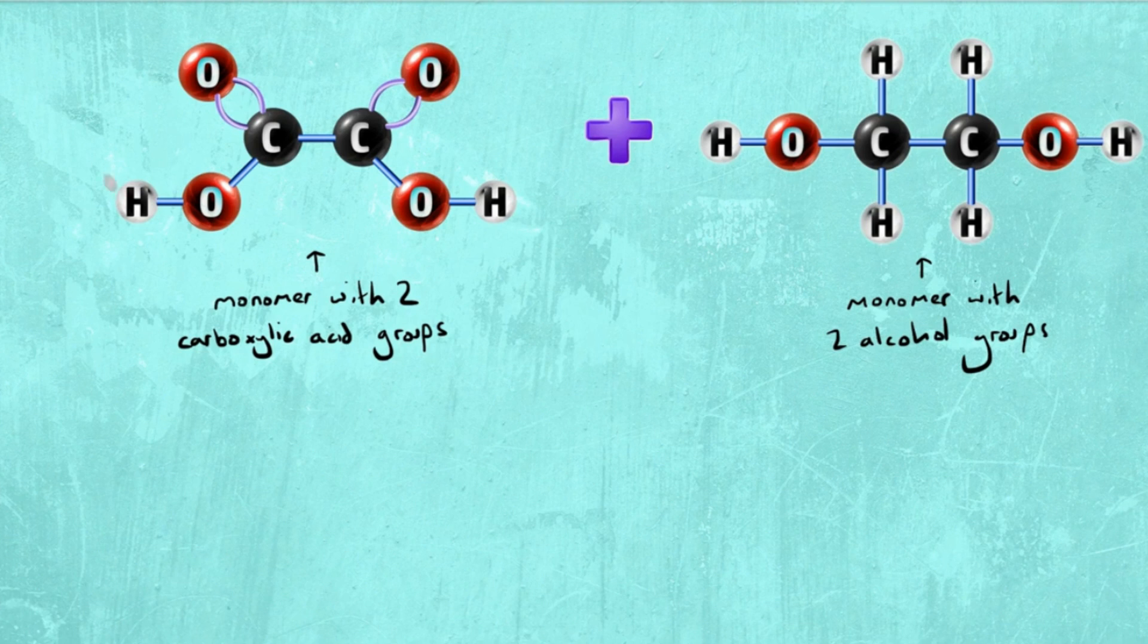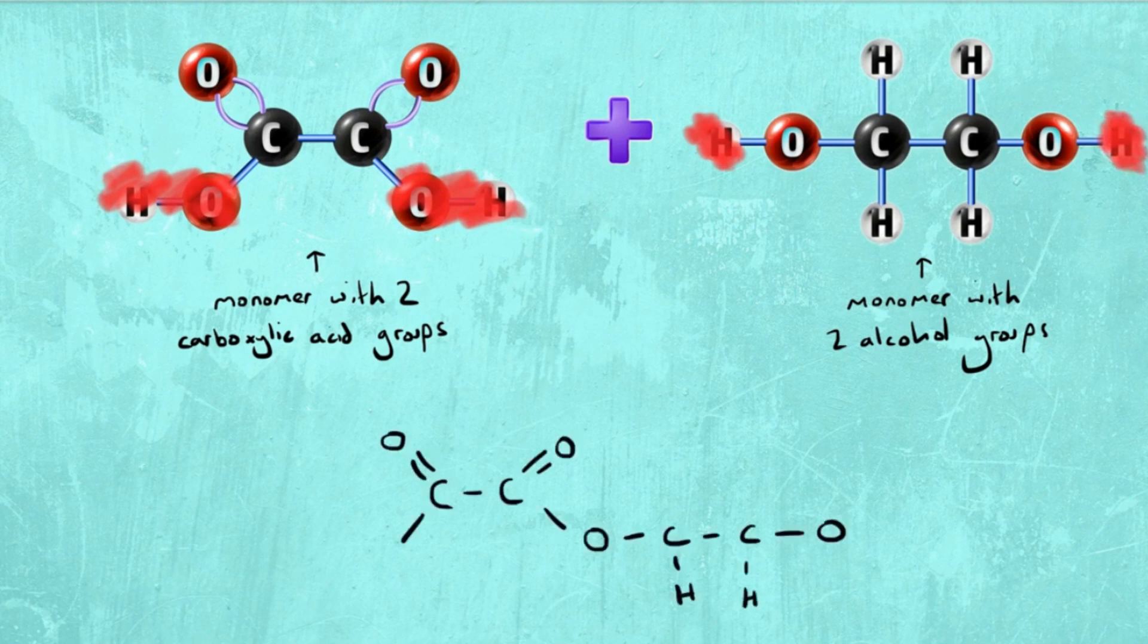Now all you do is the same. Remove the OH from the carboxylic acids and then the H from the oxygen on the alcohol. The polymer will then look like this.